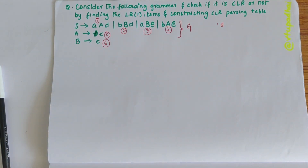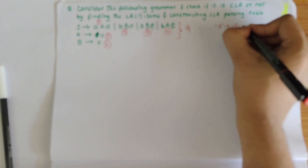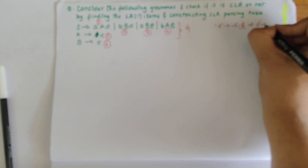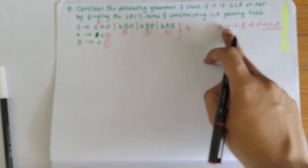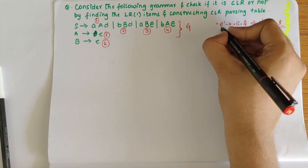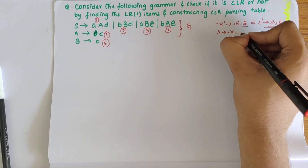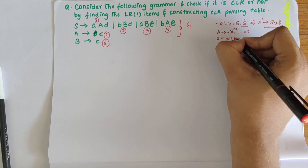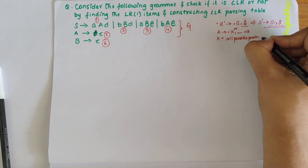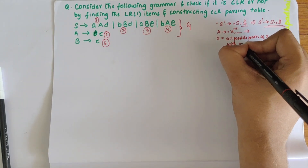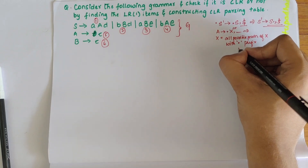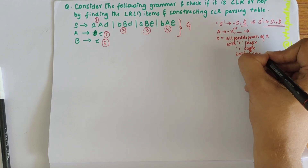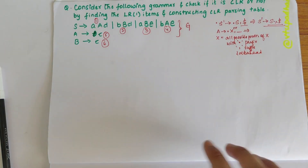My first step is to start from the production of the form S' → •S, $ where dollar is the lookahead. My aim is to shift the dot from the starting to the rightmost point. If I have the production A → •Xβ with some lookahead, and X is a non-terminal after the dot, then I should write all the possible productions of X with dot as its prefix, followed by the appropriate lookahead.